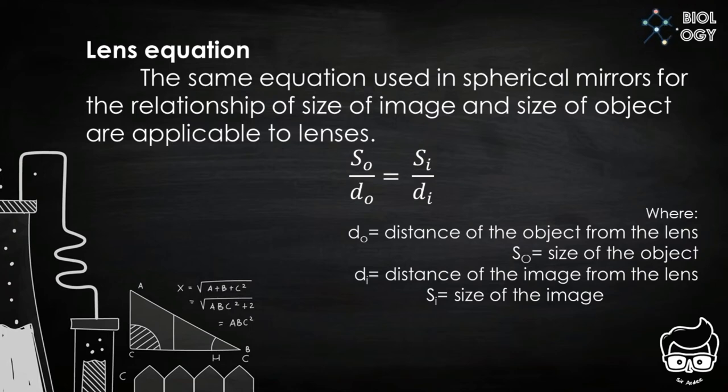Now, let's talk about lens equations. The same equation used in spherical mirrors for the relationship of size of image and size of object are applicable to lenses. We can express that as S sub O over D sub O equals S sub I over D sub I, where S sub O is the size of the object, D sub O is the distance of the object from the lens, S sub I is the size of the image, and D sub I is the distance of the image from the lens.